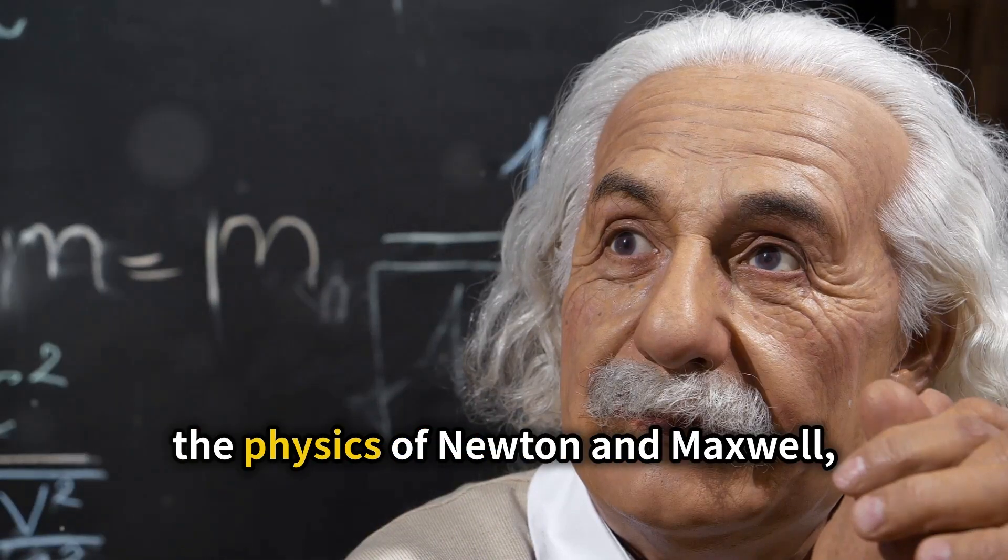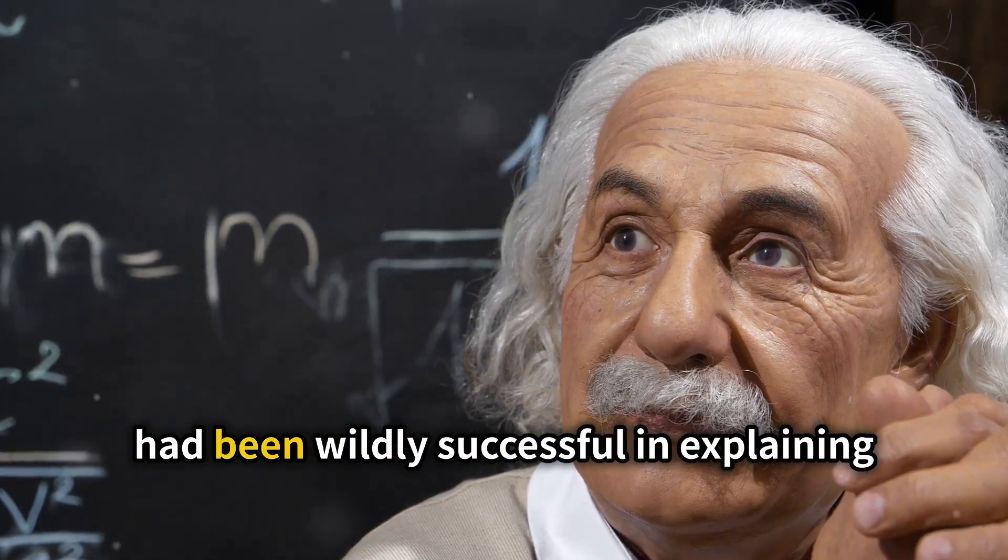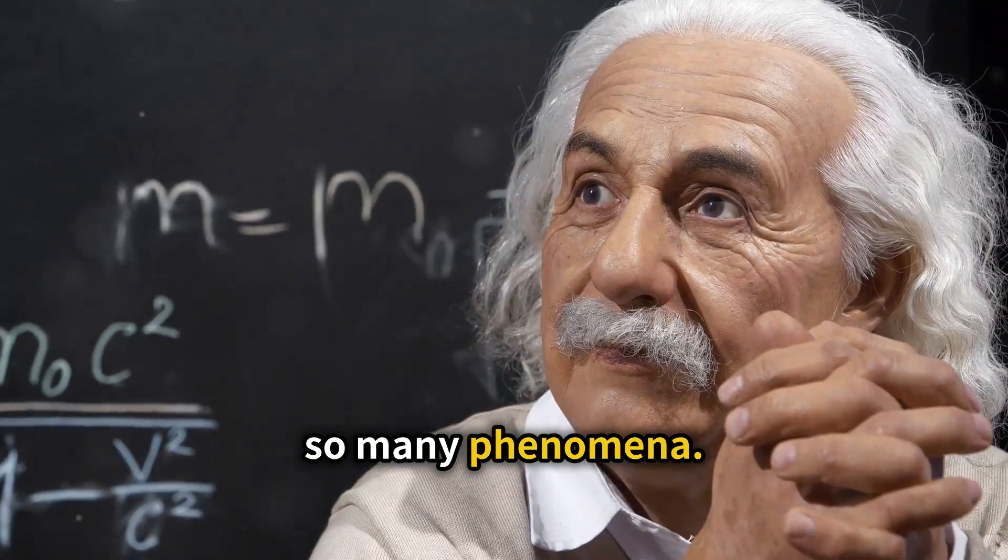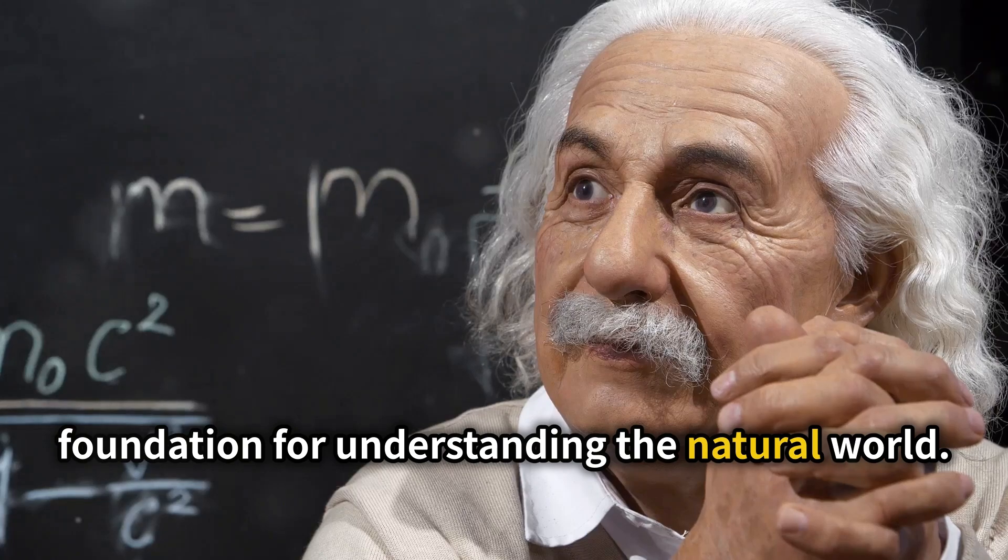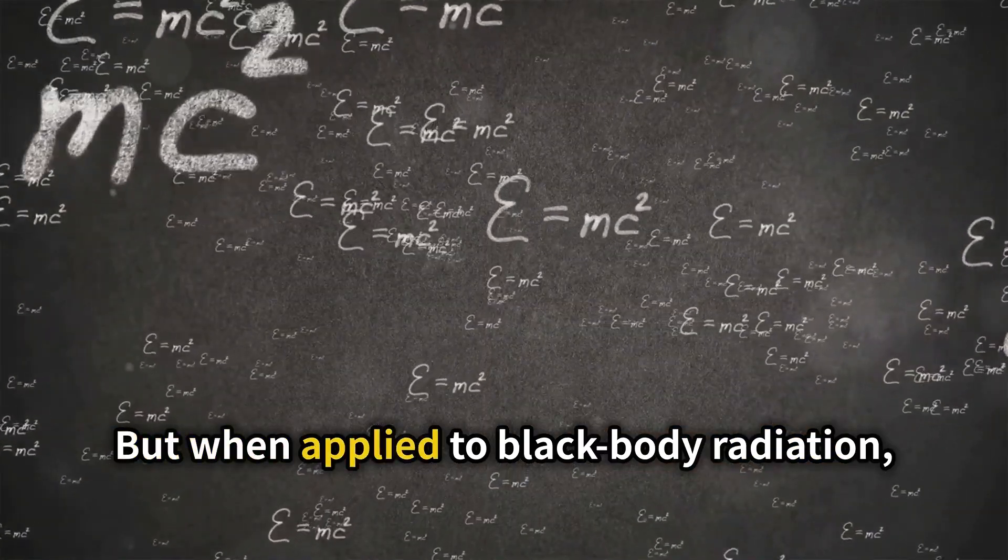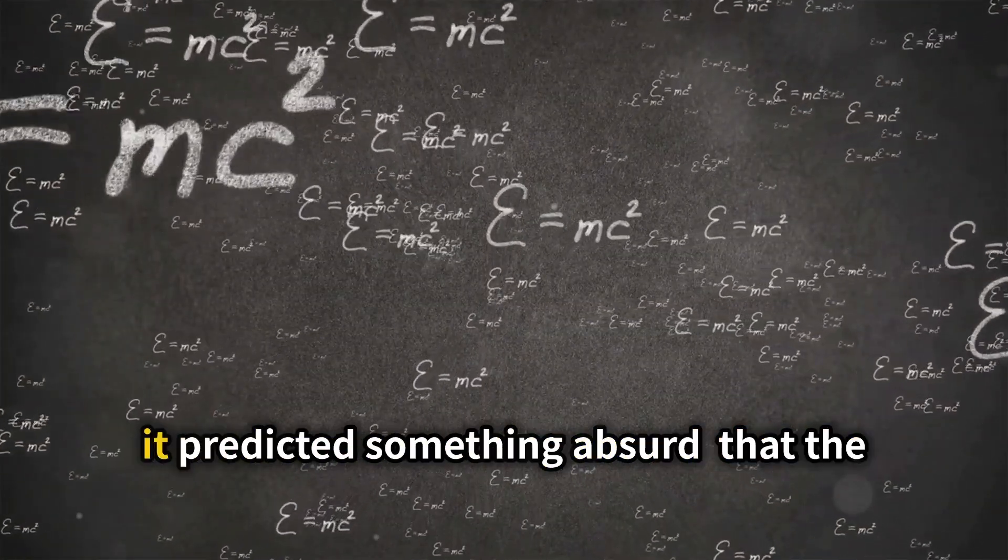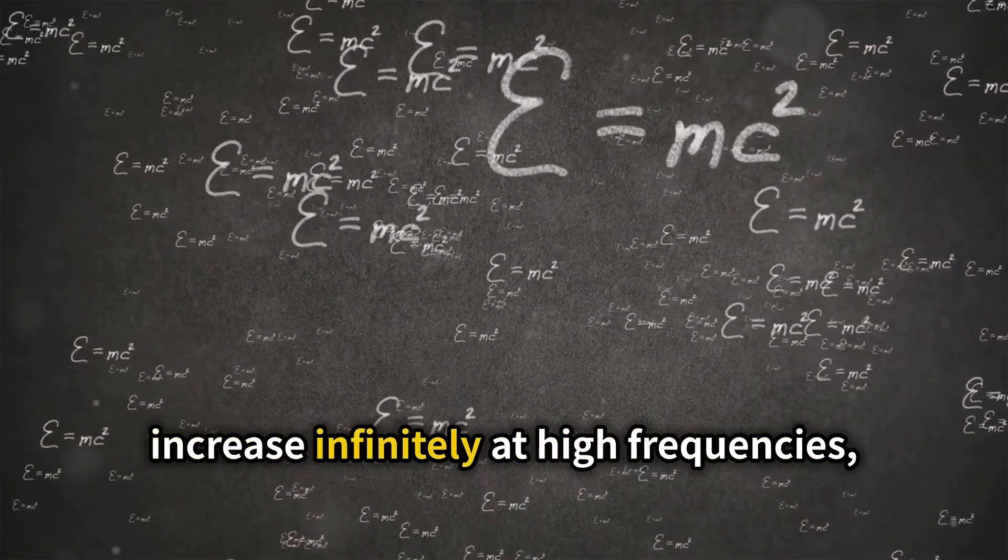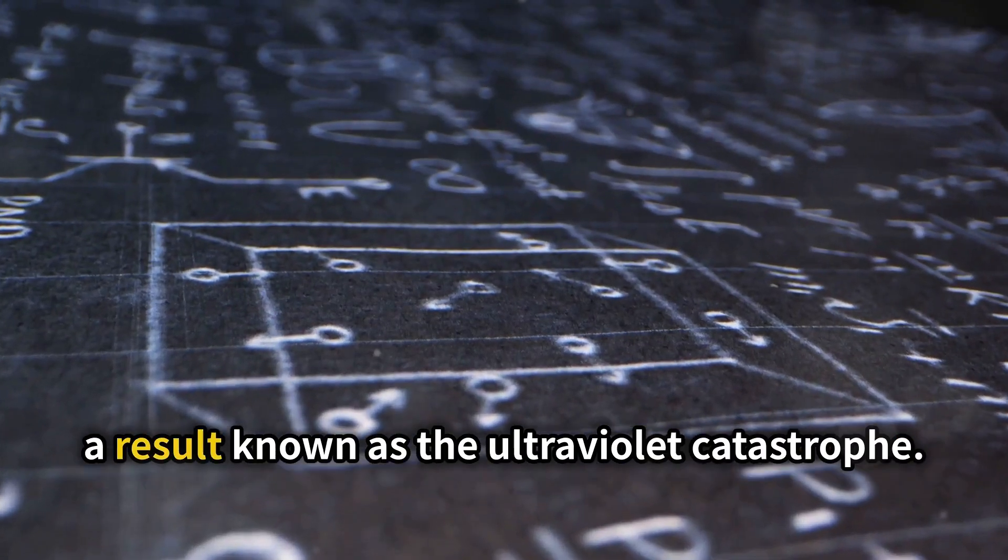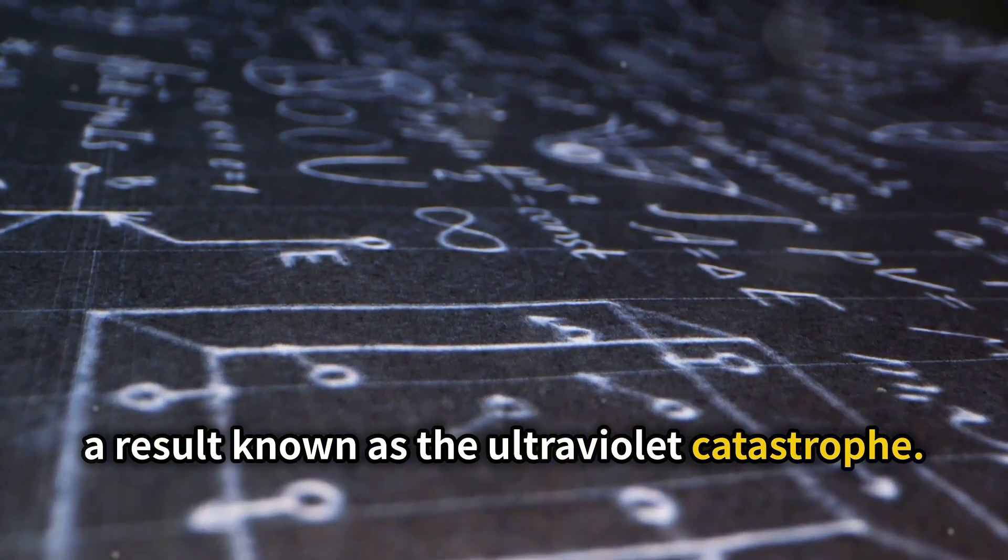Classical physics, the physics of Newton and Maxwell, had been wildly successful in explaining so many phenomena. Their theories had provided a solid foundation for understanding the natural world. But when applied to black body radiation, it predicted something absurd, that the intensity of the emitted light should increase infinitely at high frequencies, a result known as the ultraviolet catastrophe.